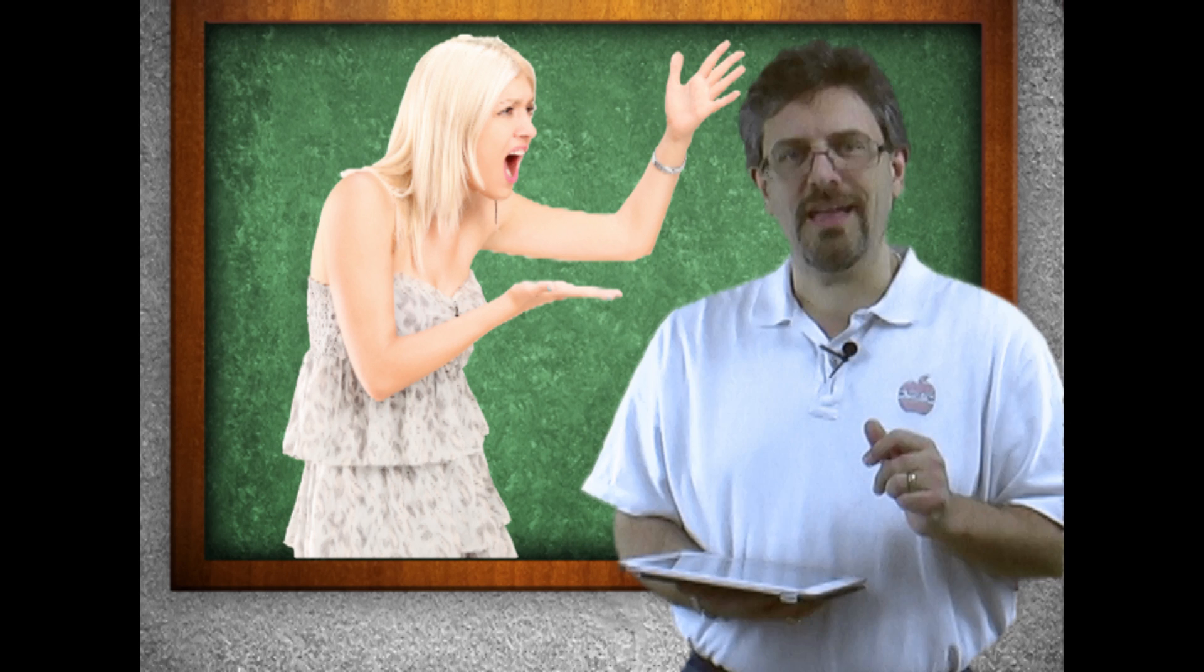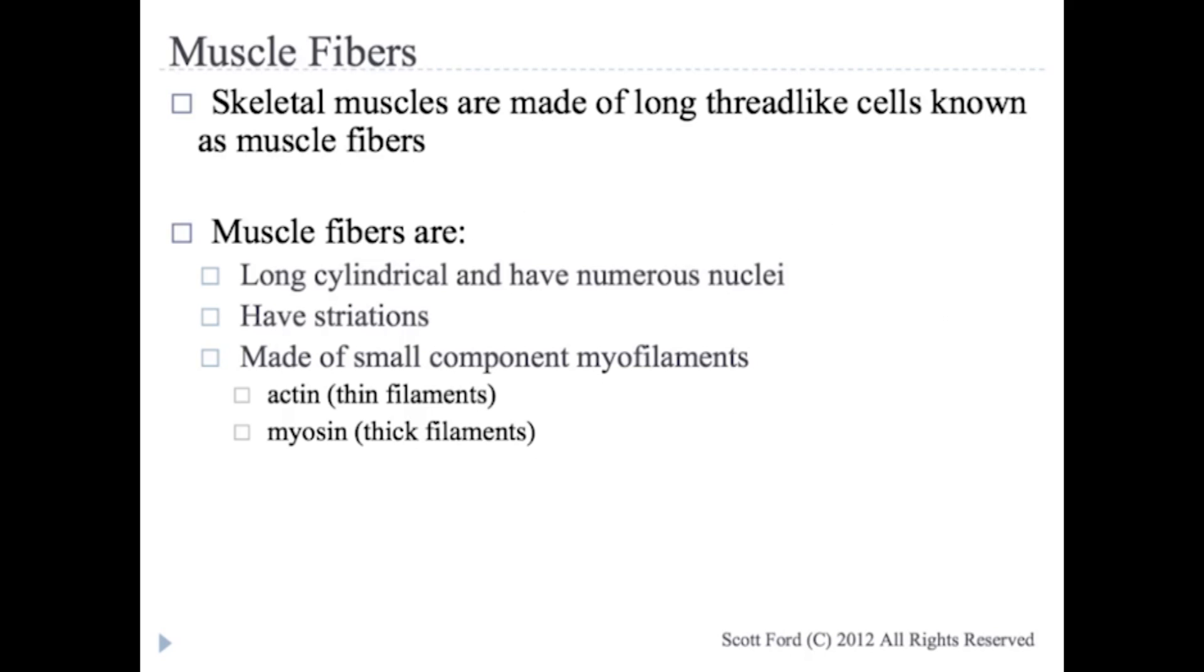We also have the fact that muscle fibers, skeletal muscles, are made of long thread-like cells known as muscle fibers. Muscle fibers are long, cylindrical. They have lots of nuclei. Again, they have the striations and like we said earlier, they're made of actin and myosin. The actin is the thin filament while the myosin is considered the thick filament.